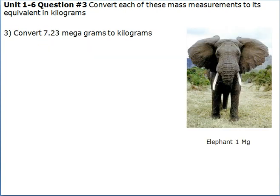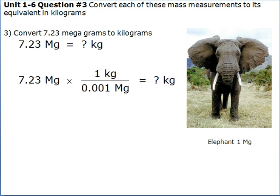Number 3: Convert 7.23 megagrams to kilograms. We are aware that there are 0.001 megagrams in a kilogram. Next, we multiply 7.23 megagrams with 1 kilogram and divide that by 0.001 megagrams.